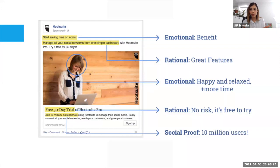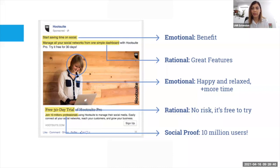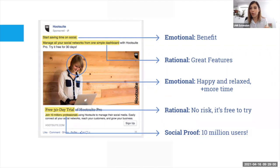Here's an example of a paid ad — HootSuite's paid ad campaign. At the very beginning it says 'Start saving time on social.' That's a benefit — saving time. Then it says 'Manage all your social networks from one simple dashboard.' So that emotion becomes rational because you think, with one simple dashboard I'm able to do it, I'm able to save time. It's going from emotion to becoming rational, talking about the great features this software has.